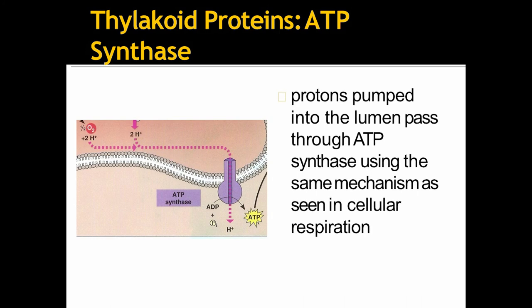The protons pumped into the lumen pass through ATP synthase using the same mechanism as seen in cellular respiration in case of mitochondria. So, ATP is produced in the stroma outside the lumen.